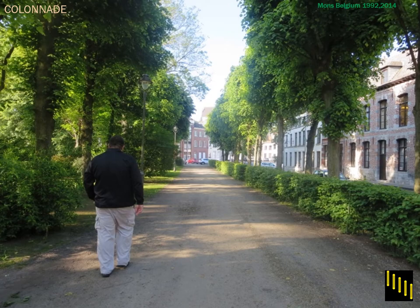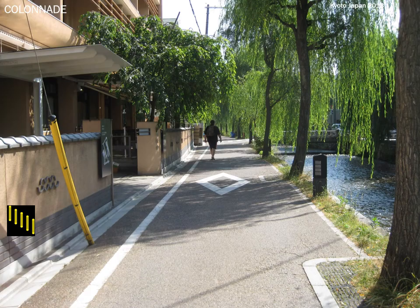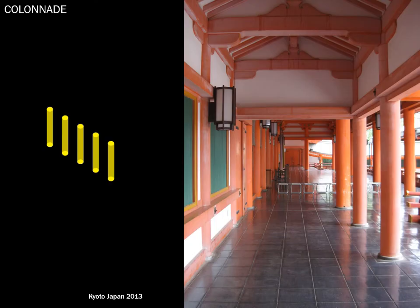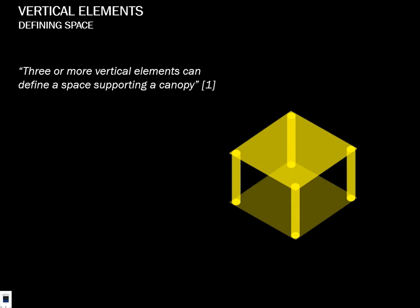Here's a colonnade in Mons, Belgium. Here's another colonnade in Kyoto — in the neighborhood we stayed, this canal really defined the neighborhood, fed into a bigger river. If you've seen the Marlon Brando film 'Sayonara,' my son and I believe it was filmed right here based on the canal. This is a Buddhist temple in Kyoto — vertical elements defining the space.